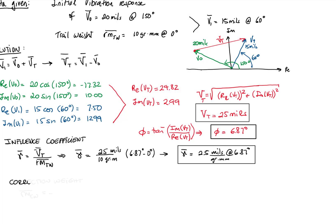So the correction weight is defined as negative the initial vector divided by the influence coefficient. Therefore, we calculate first the magnitude, which is 20 mL divided by 2.5 mL per gram millimeter, and we subtract the angles. The angles then are 150 minus 6.87 degrees.